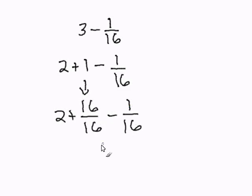16 subtract 1 is 15. Our denominator remains the same. Then I bring the 2 down, and my resulting answer is 2 and 15 over 16. And this mixed number cannot be reduced.